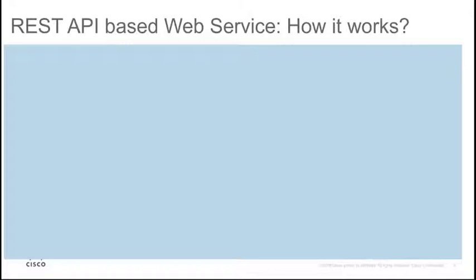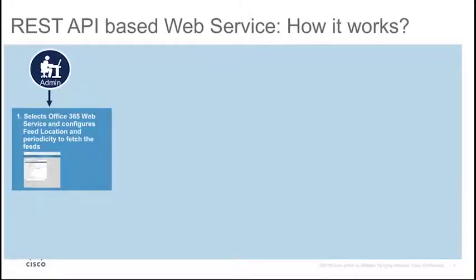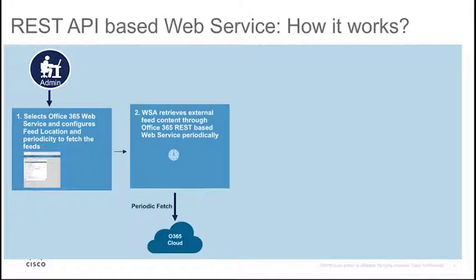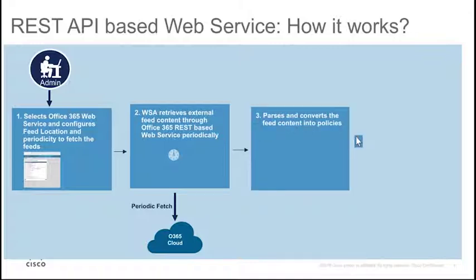How does fetching Office 365 feeds using REST API-based web service work? First, the admin selects Office 365 web service in the custom and external URL categories page on the WSA web UI. The admin configures the web service URL and periodicity for auto-updates on this page. Once the configuration is submitted and committed, WSA retrieves external live feed content through the Office 365 REST-based web service periodically, as it does for feeds from an external source or Office 365 feeds in XML format. Fetching Office 365 feeds both in XML format and through REST-based web service is supported in the current implementation. Support for fetching Office 365 feeds in XML format will be removed in future AsyncOS releases still in planning. Once Office 365 feeds are fetched through REST-based web service, WSA parses and uses this information to help customers create access policies and decryption policies using the configured Office 365 external feed categories.